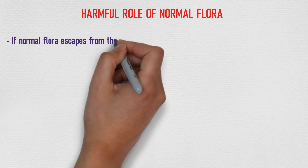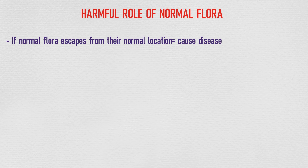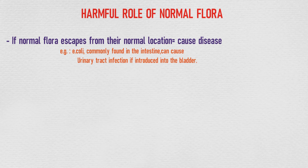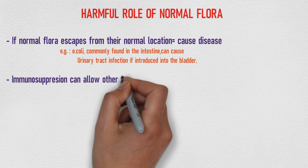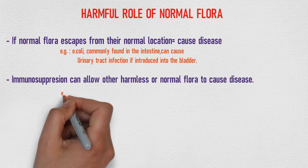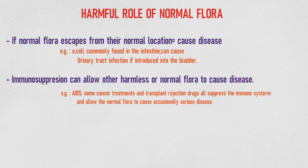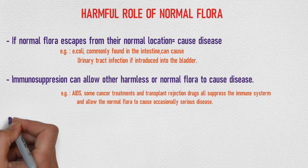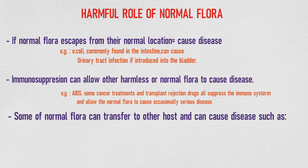Normal flora also has a negative impact on the host. If normal flora escapes from its normal location, it can cause disease — for example, E. coli commonly found in the intestine can cause urinary tract infection if introduced to the urinary bladder. Immunosuppression conditions can allow normal flora to cause disease — for example, AIDS, certain cancer treatments, and transplant rejection drugs all suppress the immune system and can allow normal flora to cause occasionally serious diseases.